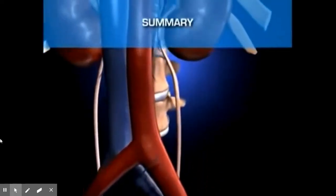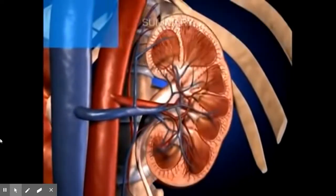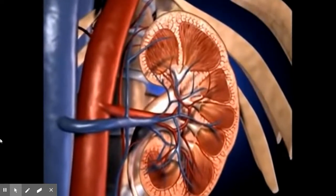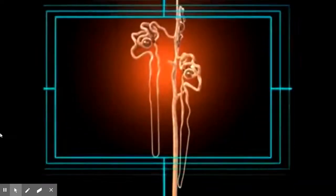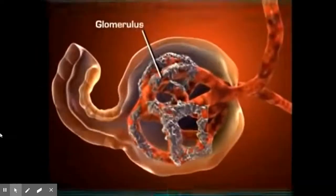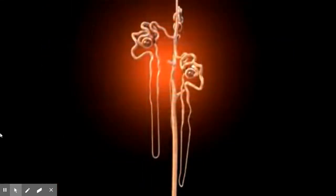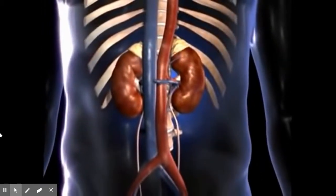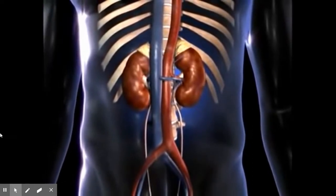The kidneys perform an excretory function by filtering the blood and then selectively reabsorbing those materials needed to maintain a stable internal environment. The nephron is the functional unit of the kidney, composed of a glomerulus which filters the blood, a tubular component where necessary substances are reabsorbed into the bloodstream, and unneeded materials are secreted into the tubular filtrate for elimination in urine.